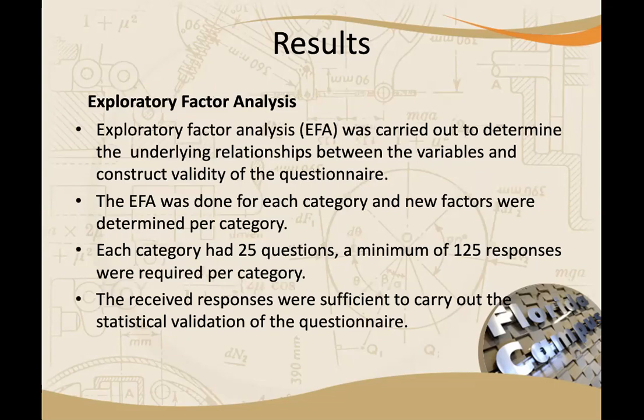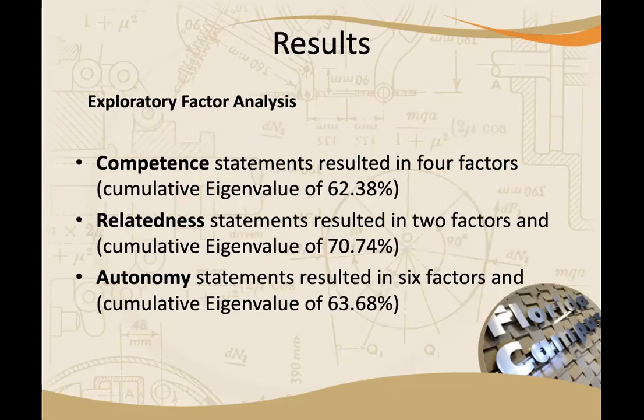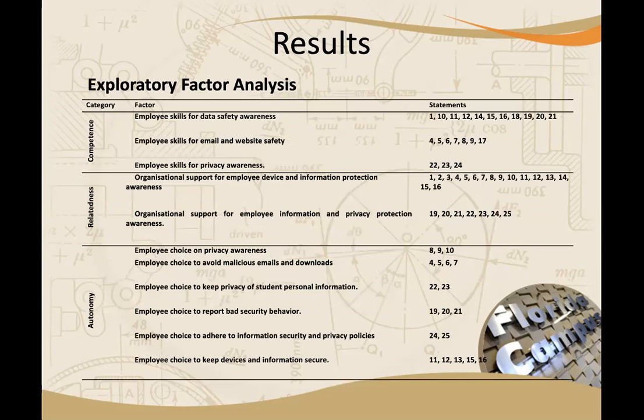The student conducted an Exploratory Factor Analysis to validate the questionnaire, done separately for each of the three constructs. Each questionnaire had 25 questions and required 125 responses per construct to conduct the factor analysis. The competence statements resulted in four factors, relatedness in two factors, and autonomy in six factors. The factor analysis output shows the statement numbers grouped into new factor groupings, with new names allocated to each set of questions.